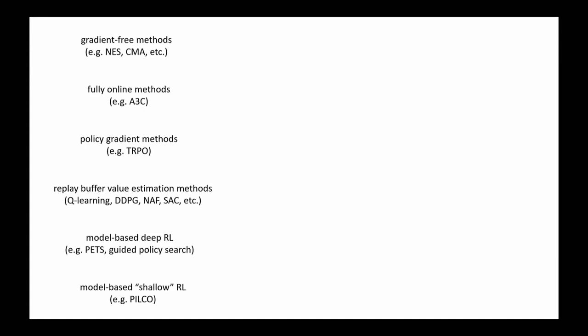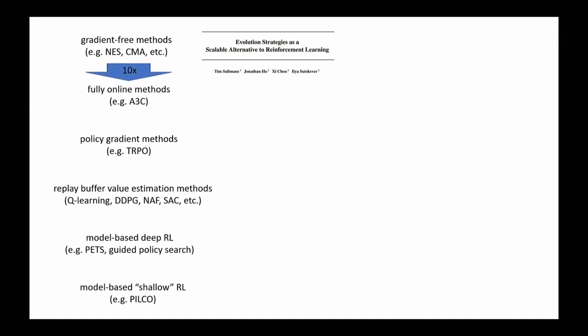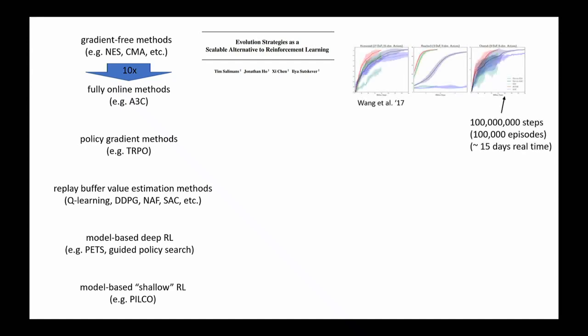Comparing sample efficiency across categories, for evolutionary versus fully online methods it's about a 10X difference. A 2017 A3C cheetah task requires on the order of 100 million steps — equivalent to 15 days of a real cheetah running. A 2016 TRPO plus GAE method gets the half cheetah running for about 1.5 days of real time — about 10X less. The evolutionary methods would be around 150 days.